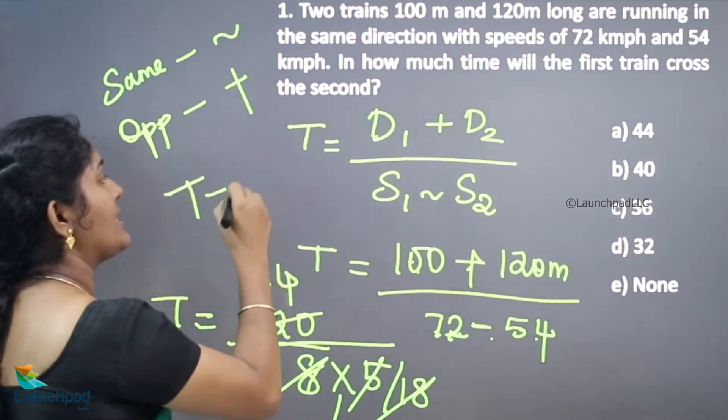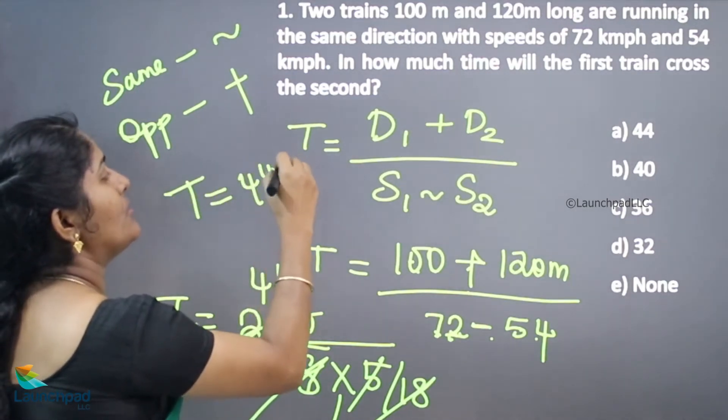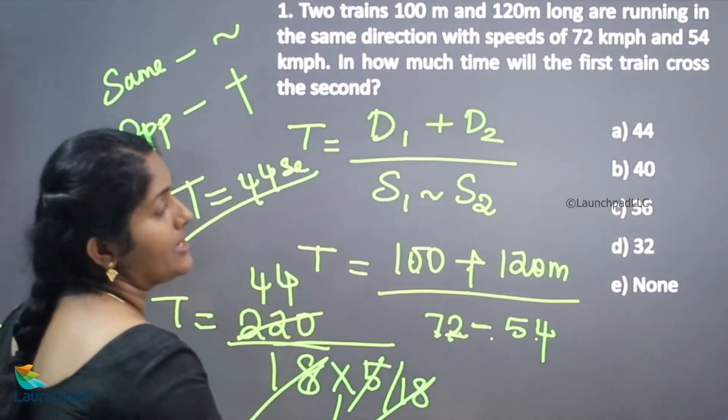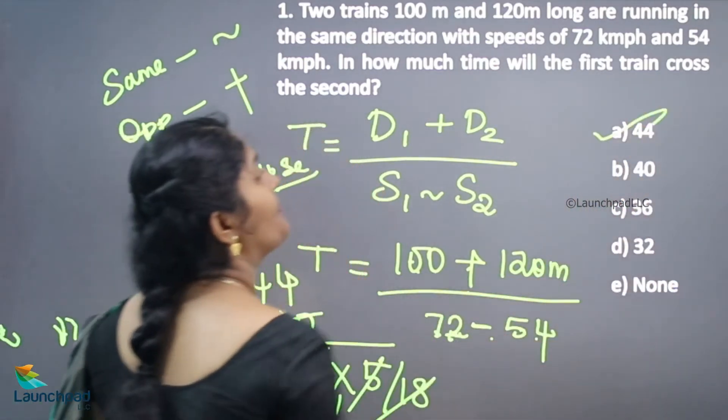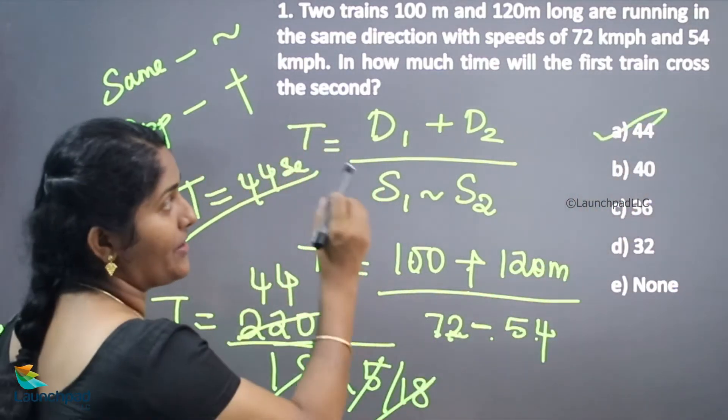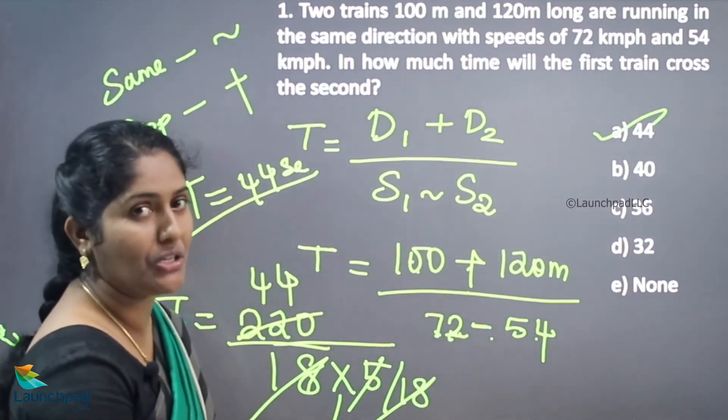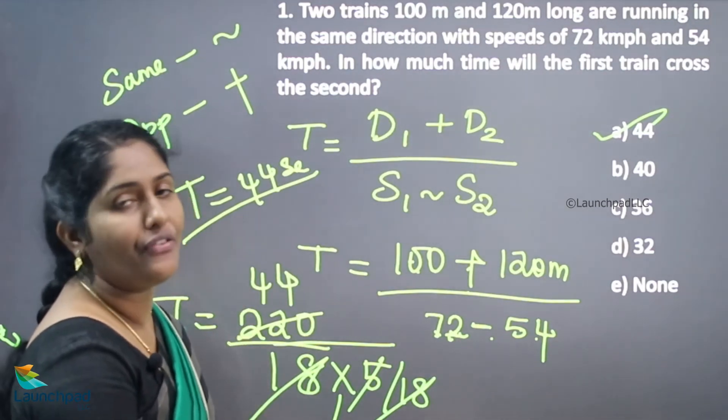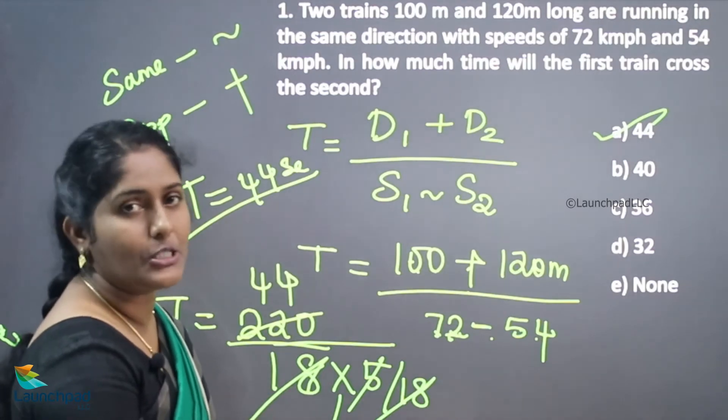What is your time taken to cross each other? 44 seconds. So hence your option is A. Here we have one different data. What is the same direction? Same direction means we should consider the difference of their speeds.